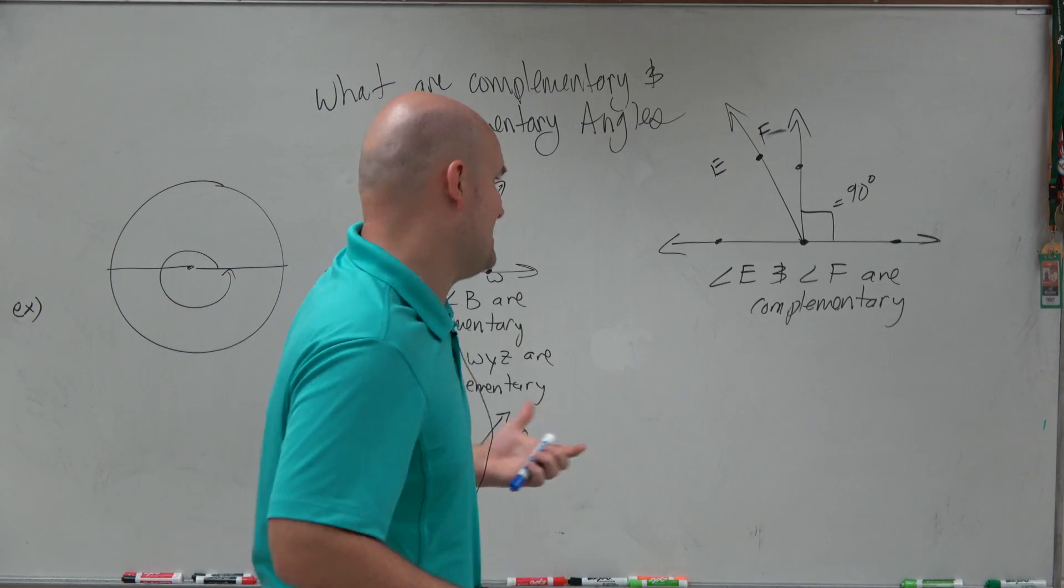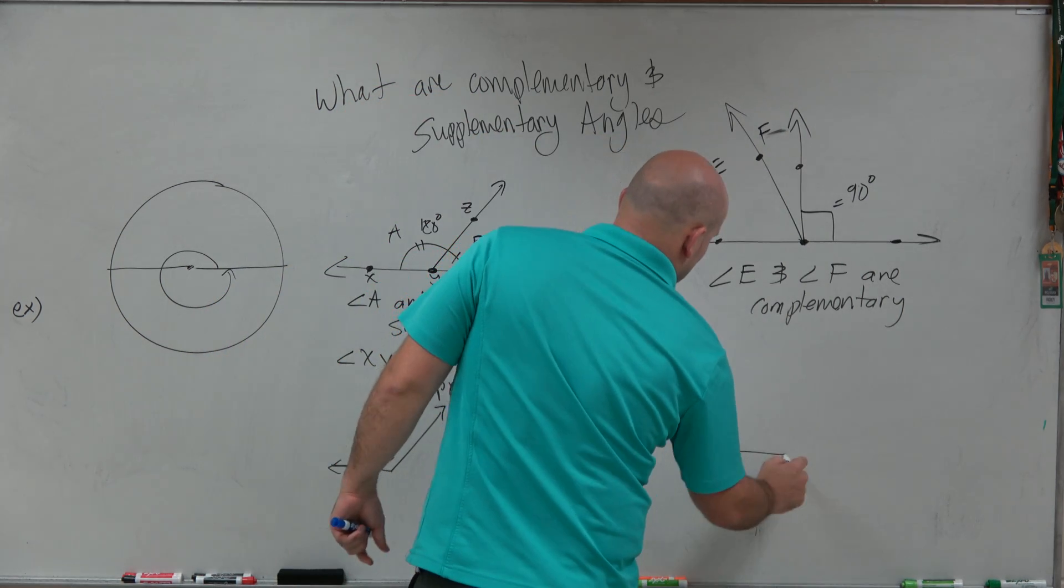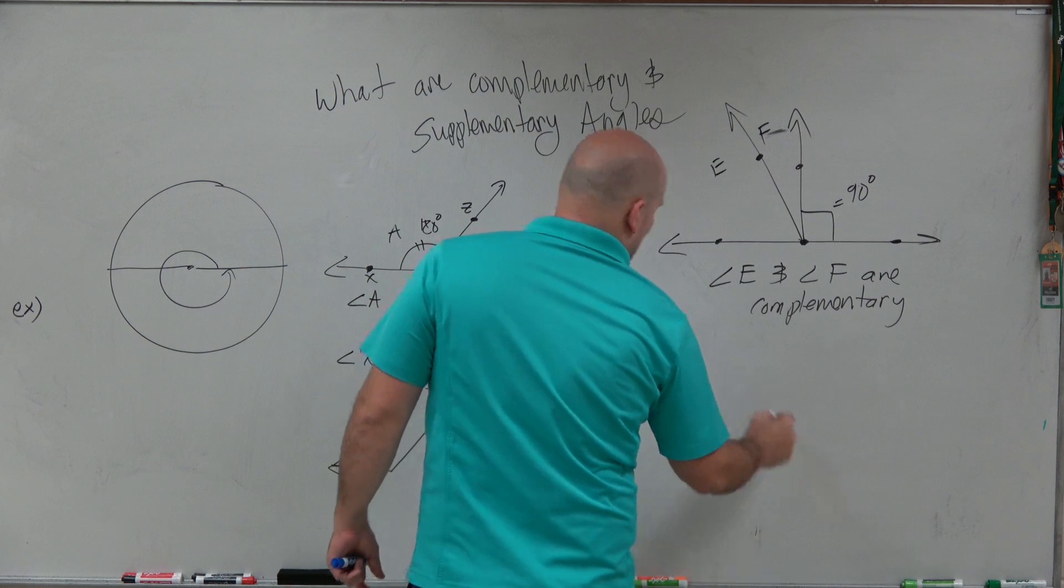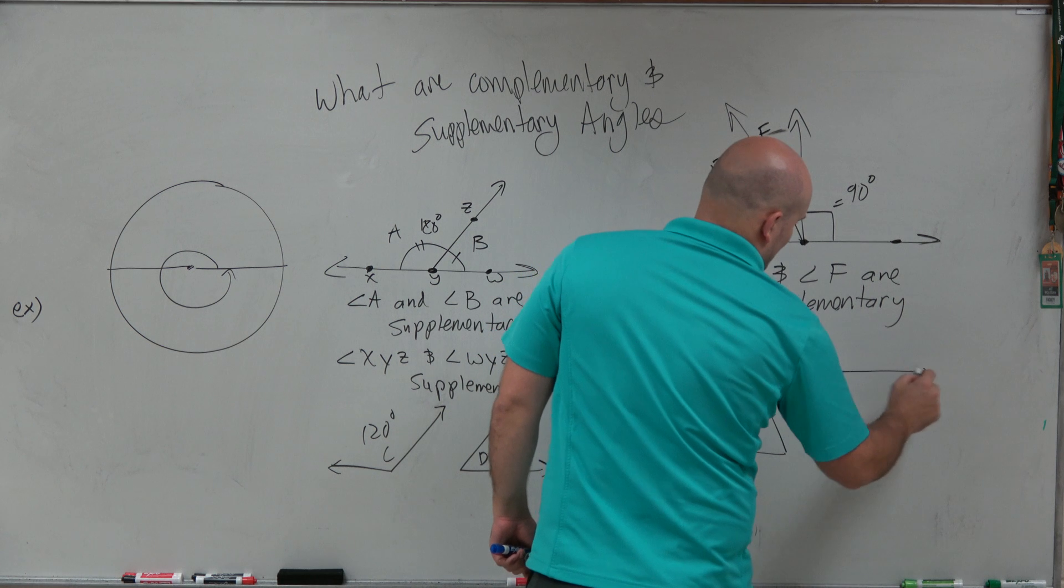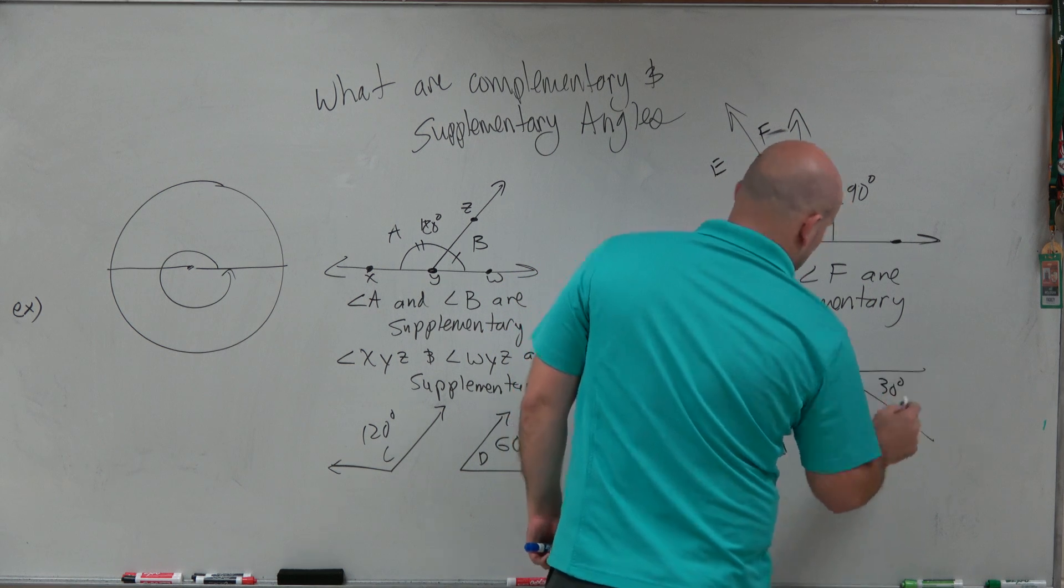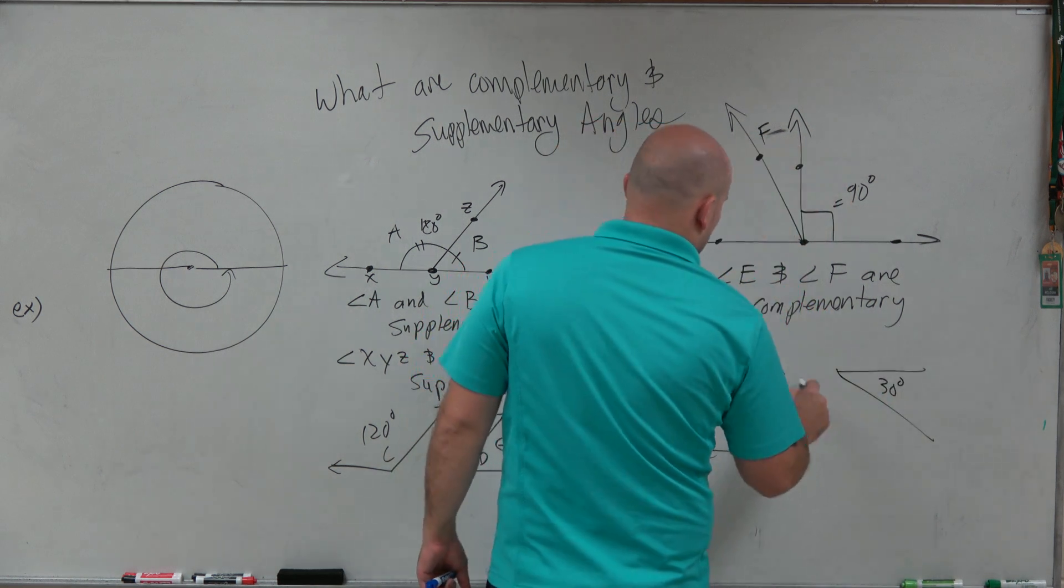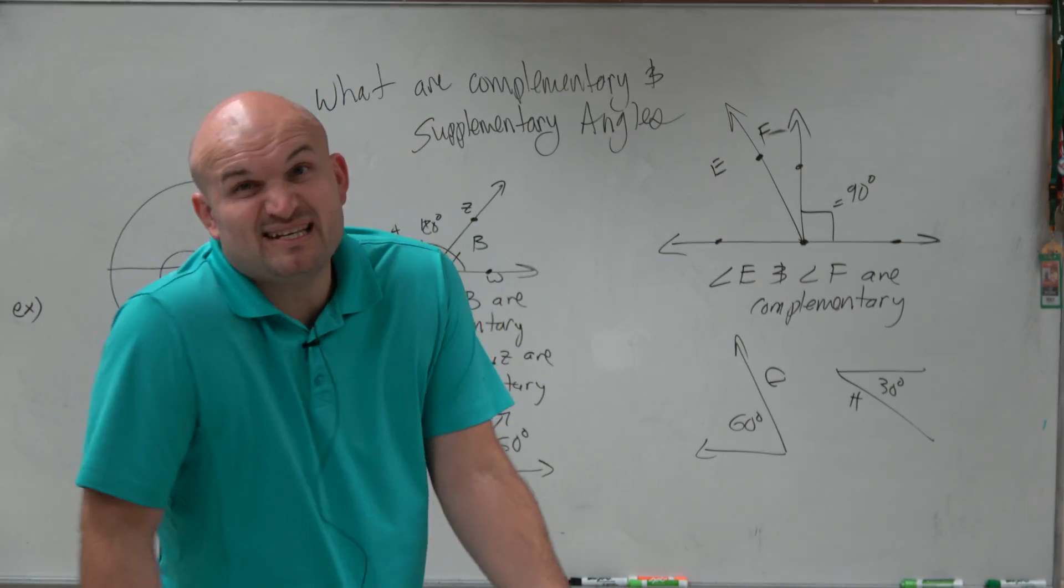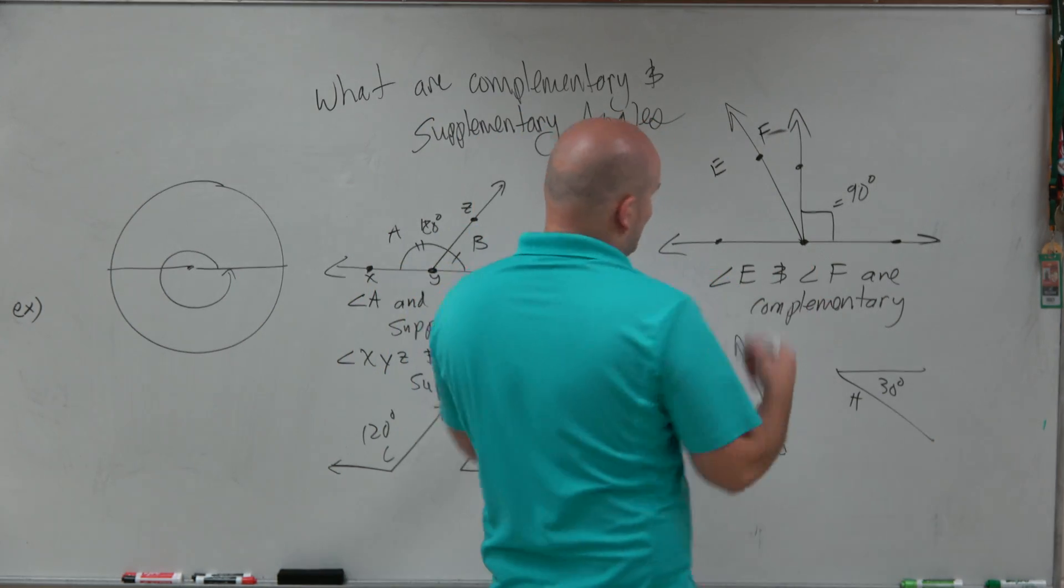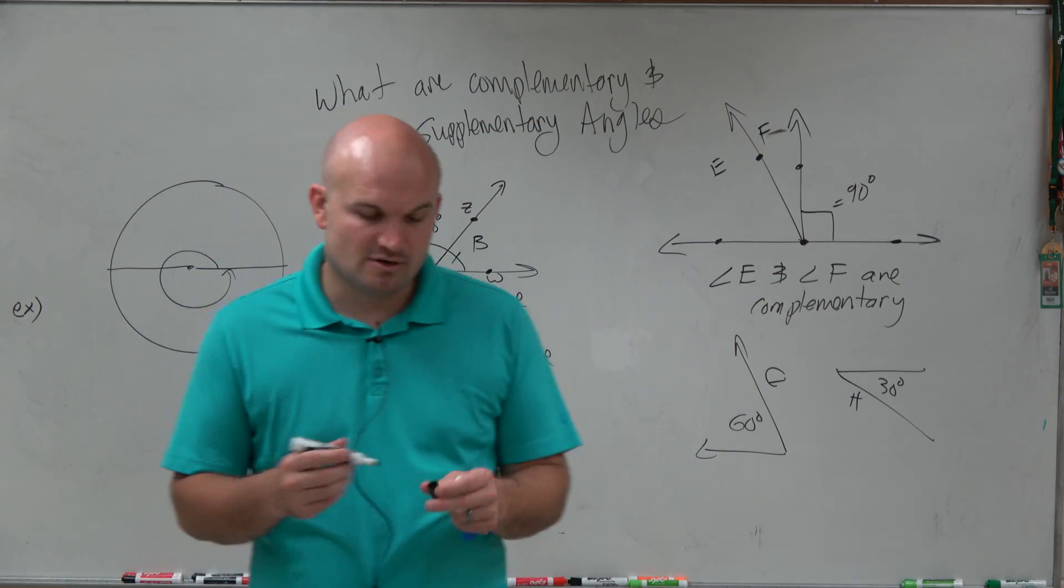However, again, we don't need to have angles that are exactly perfect. They don't have to be adjacent, meaning share the same side. So as long as I have an angle that's like, let's say, 60 degrees, and let's say I have this one over here that looks like 30 degrees, let's call these angle G and H. Well, as long as G and H add up to 90 degrees, we can say that they are complementary.